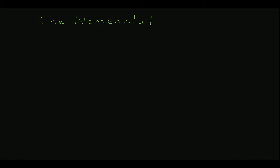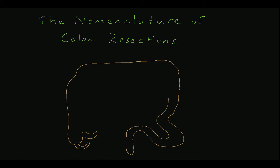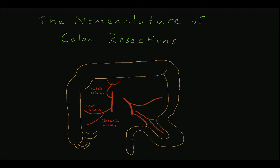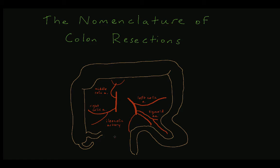Now is a good time to describe the nomenclature used to describe colon resections. As with the surgical resection of any organ, the accompanying blood supply must also be ligated for the operation to proceed in a hemostatic fashion. Ligating different combinations of the branches of the SMA and IMA and their venous counterparts will allow for different distributions of colon to be removed. An ileocecectomy requires ligation of the ileocolic artery. As the name implies, a portion of distal ileum and cecum are removed.